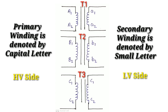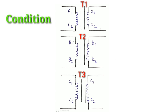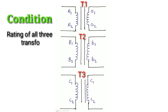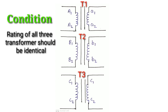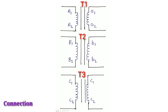Let's see the connection. Suppose the transformer primary side is in delta and the secondary side is in star. If the primary side is delta, we have to make this connection.